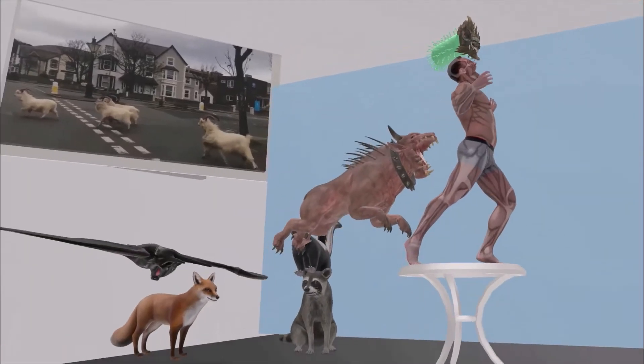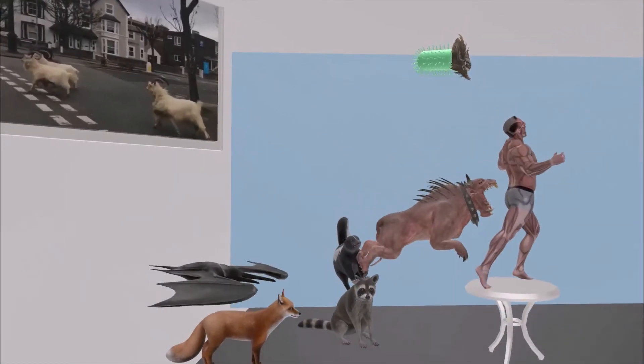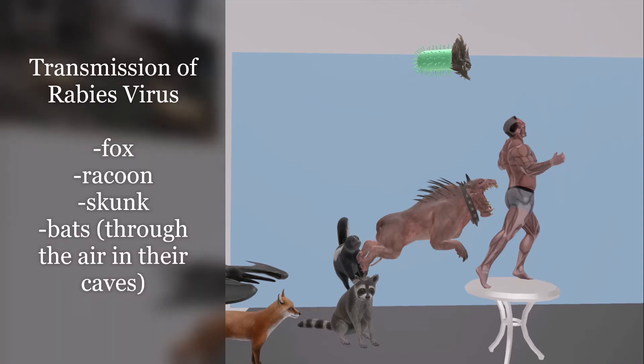But anyway, we notice these animals over here. We notice the bat, the fox, the raccoon, the skunk, and the scary dog. These are all animals which can carry the rabies virus. For most animals, it travels through their saliva.